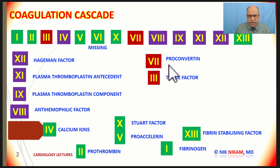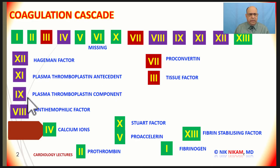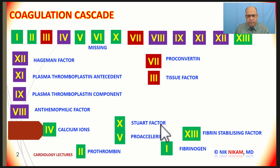Factor 7 is proconvertin. Tissue factor and proconvertin act through the extrinsic pathway. Factor 12 is the Hageman factor, factor 11 is plasma thromboplastin antecedent, factor 9 is plasma thromboplastin component, and factor 8 is anti-hemophilic factor. Factor 10 is the Stuart factor.